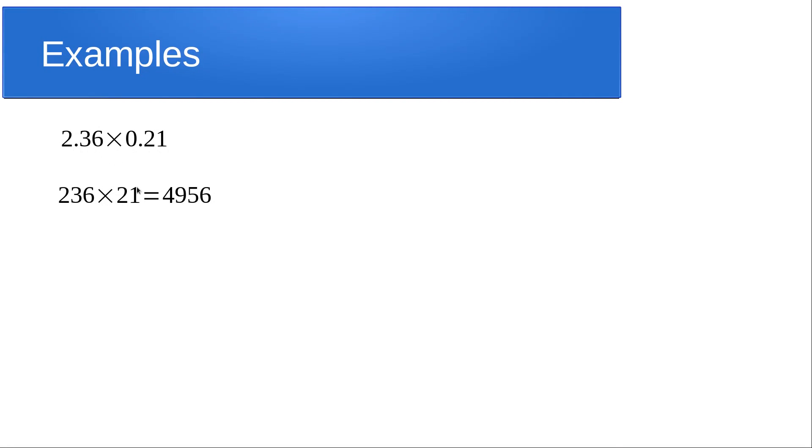Now we count the number of digits after the decimal point in the question. There are two here and two there, so we need four digits after the decimal point in our answer. If we put the decimal point there we've got one, there we've got two, there we've got three. So the decimal clearly has to go here and we get 0.4956.